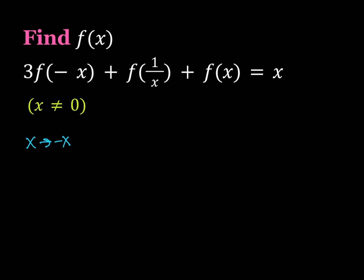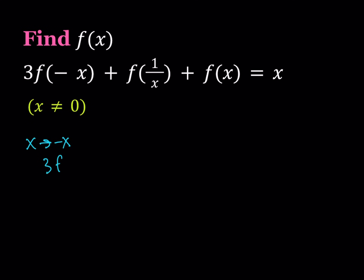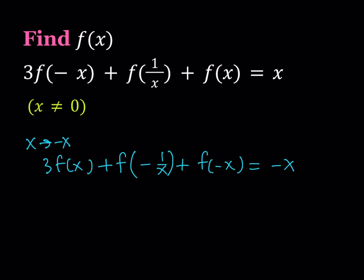If I do that, I'm getting something like this: 3 times f of x plus f of negative 1 over x plus f of negative x equals negative x. So that's going to be my second equation. The first one is the original, this is going to be my second equation.